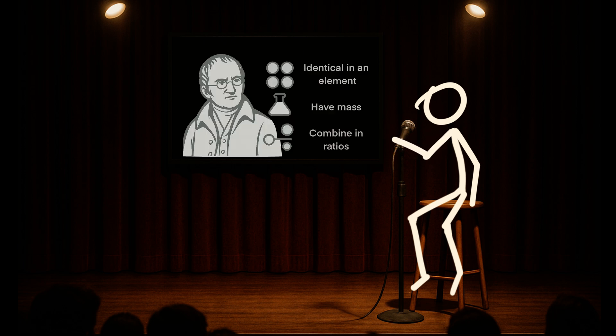Fast forward to 1803, we finally get our nerd king John Dalton. His big idea was that all atoms of one element are identical. Dalton's like let's bring back the uncuttable ball theory. Elements are made of identical atoms, they have mass, they combine in ratios. And everyone went whoa he's using math, this is real now. Dalton basically turned atomic theory into IKEA instructions.